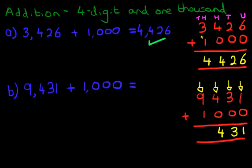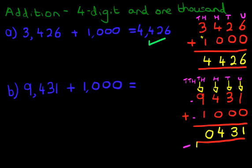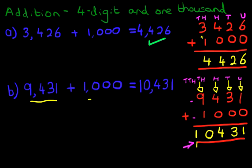And finally we do the thousands column. Nine plus one — we know nine plus one is ten, so we put a one here and a zero here. This creates a new column, the ten thousands column. We don't have any ten thousands in either number, but we do have one carry, so we put one there. Our answer is ten thousand four hundred and thirty-one. So nine thousand four hundred and thirty-one plus one thousand equals ten thousand four hundred and thirty-one.